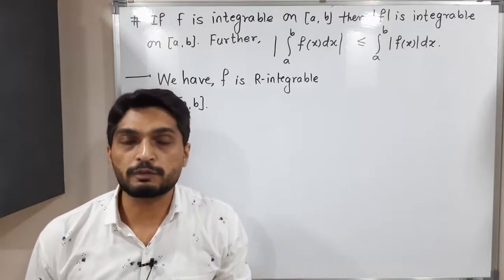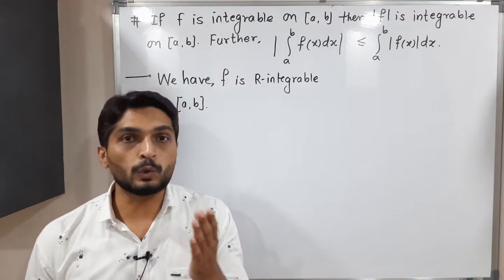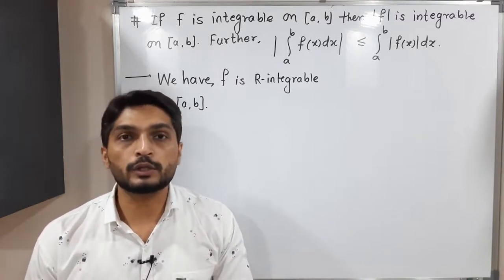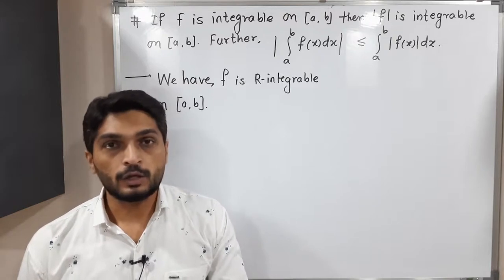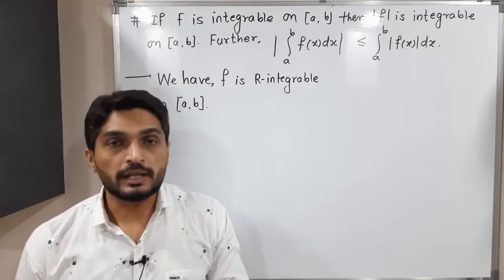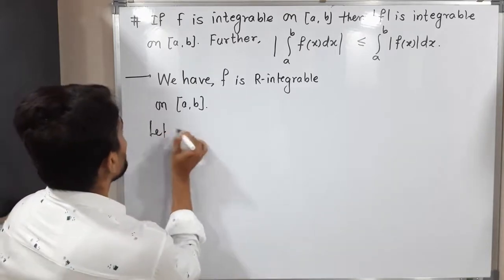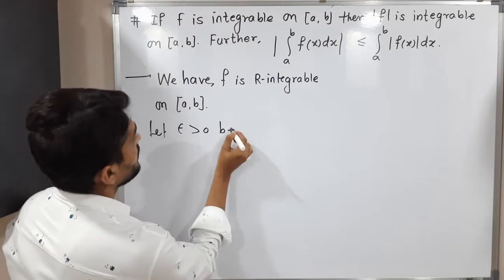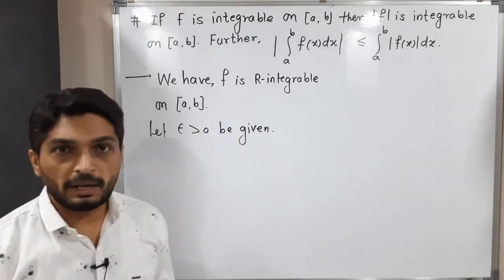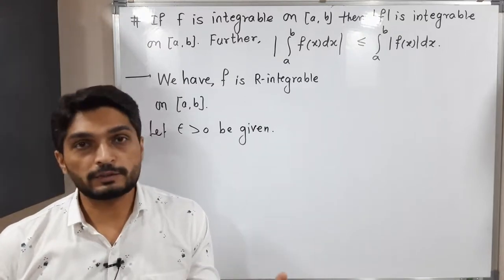There are two ways to prove a function is Riemann integrable. Either we can prove the upper integral is equal to the lower integral, or we have the epsilon definition — we can also call it the Riemann criterion. We are going to follow the second method, that means using the epsilon definition. Let epsilon greater than 0 be given. Since the function is Riemann integrable, we can apply the epsilon definition.